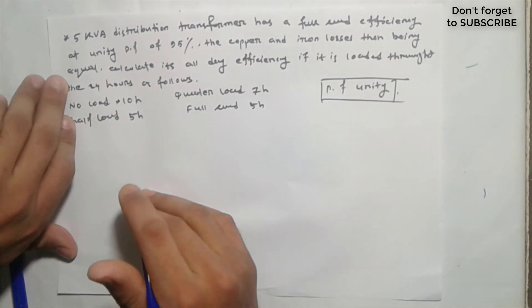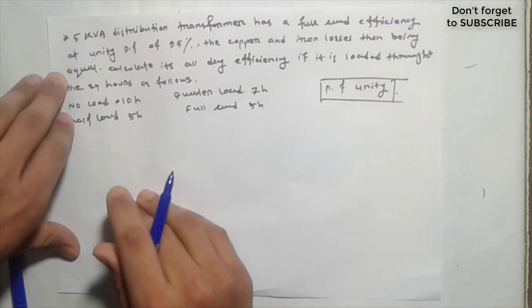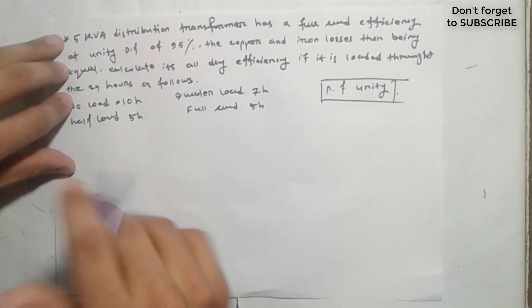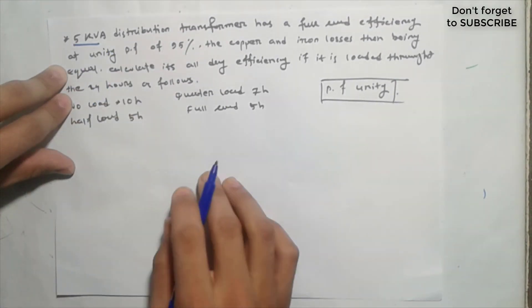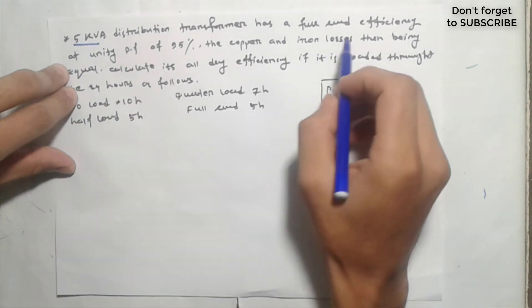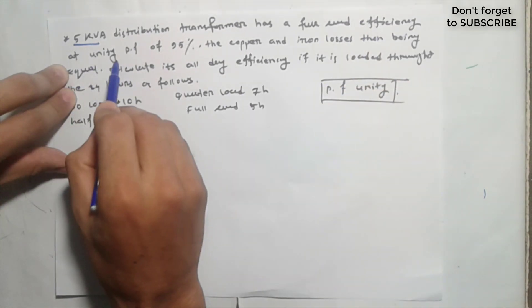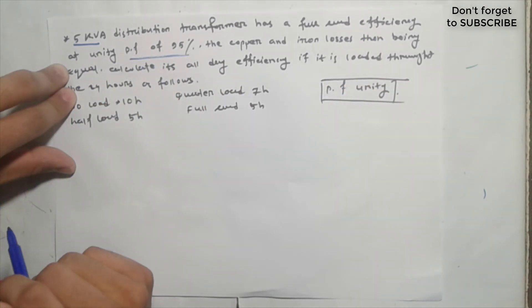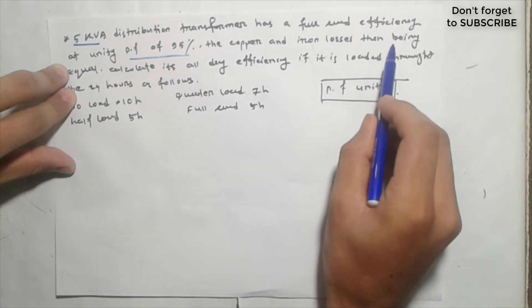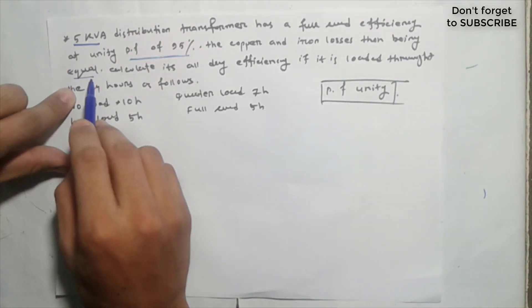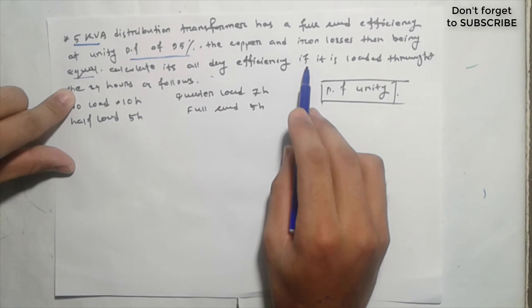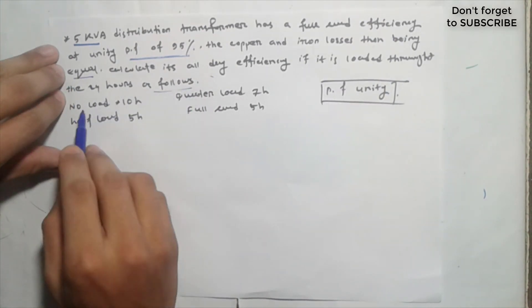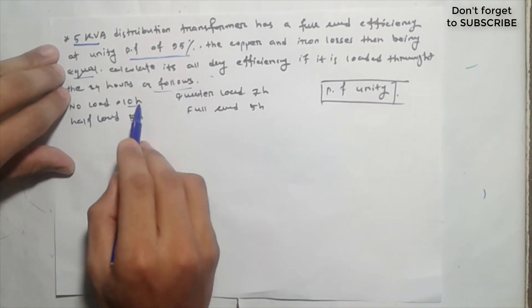Welcome to the electrical machine course. In this video we cover the all-day efficiency of a transformer. A 5 KVA distribution transformer has a full load efficiency at unity power factor of 95%. The copper loss and iron loss are given. We need to calculate the all-day efficiency over 24 hours at the following load schedule: 10 hours at full load, and other periods at fractional loads.